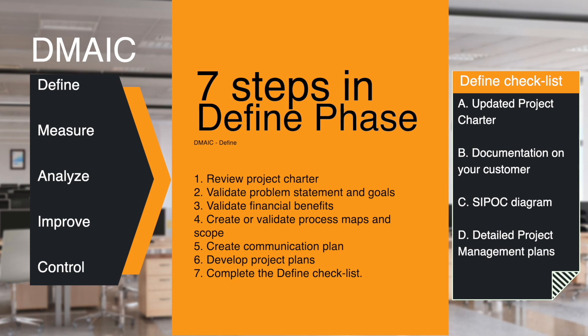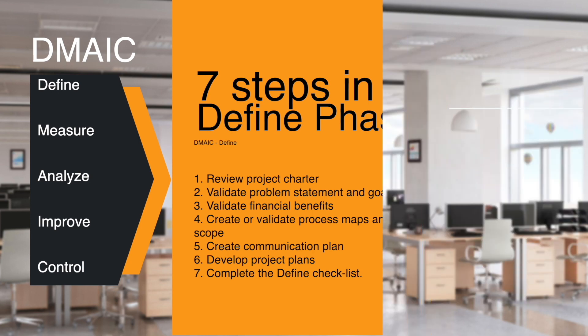Item C: SIPOC diagram. Item D: Detailed project management plans. You should have a more detailed schedule of activities, for example using a Gantt chart. You should get a list of stakeholders impacted by the project and their expectations and concerns. Also include a communication plan, risk management plans, and identification of barriers or obstacles.